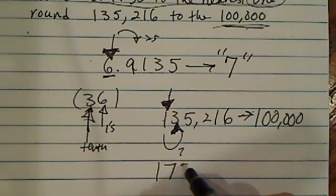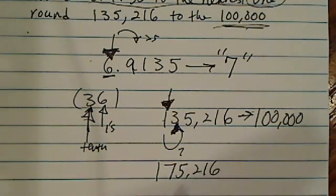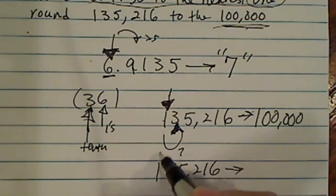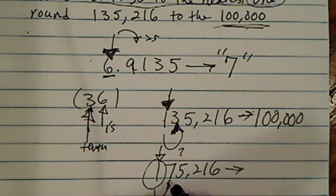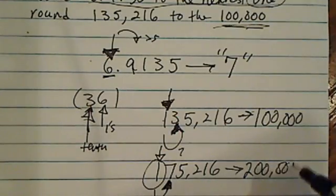If we have 175,216, and it's still rounding in the same place, we're going to put an arrow over here. And then looking behind, we have a 7. That's bigger than 5, so you get 200,000.